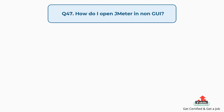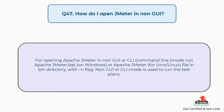Question 47: How do I open JMeter in non-GUI mode? For opening Apache JMeter in non-GUI or CLI mode, run jmeter.bat on Windows or jmeter for Unix/Linux from the bin directory with the -n flag. Non-GUI or CLI mode is used to run test plans.